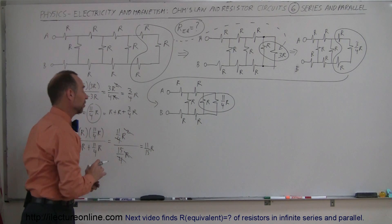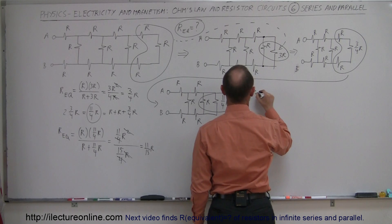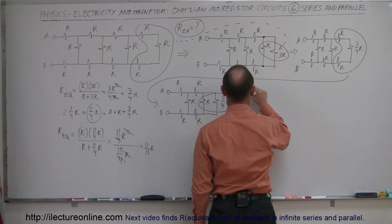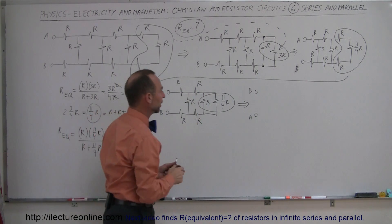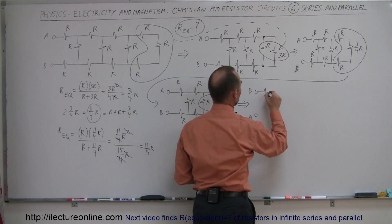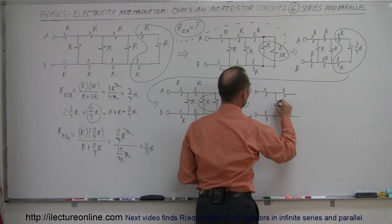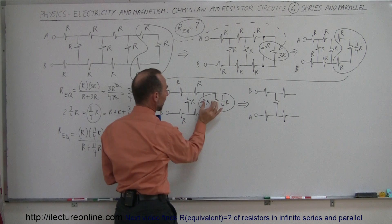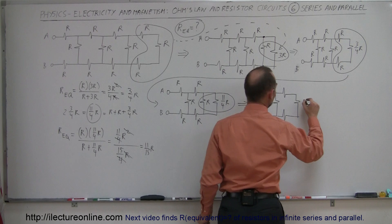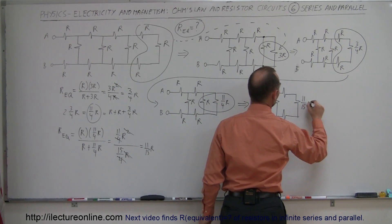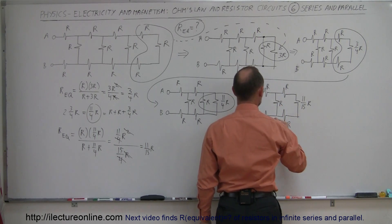So those two combined will form a single resistance with the equivalent resistance of 11/15 R. Our circuit will now look like this: we have A and B. Notice we still have those two resistors and those two resistors and the one in the middle. Now those two combined form a single resistor of 11/15 R. The remaining ones are still R, R, R, and R.